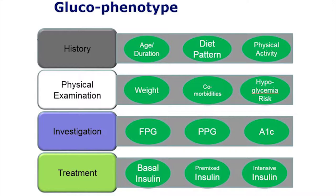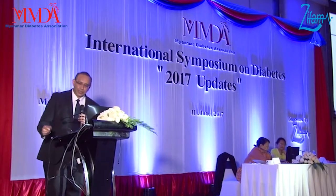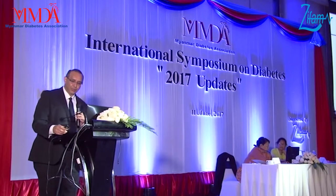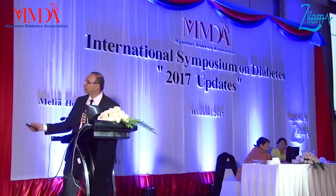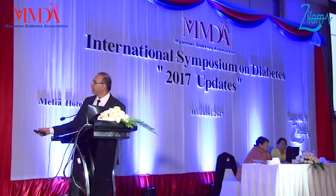If we adapt this word for our use, we use the word 'glucophenotype.' That means all angles of the medical history, physical examination, and the glucose values — this is a particular person's glucophenotype. You can look at it from the history and physical examination point of view.